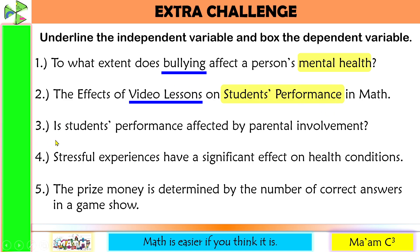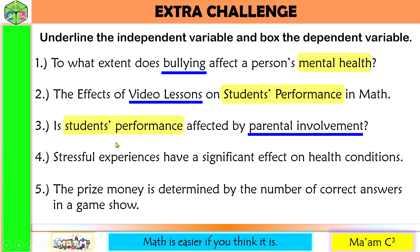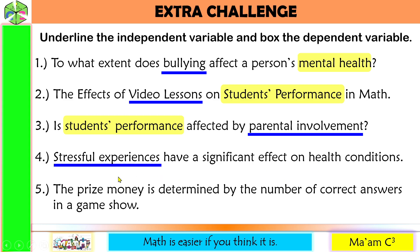Number three: is student's performance affected by parental involvement? The independent variable is parental involvement — depending on the parental involvement, you can analyze the student's performance, which is the dependent variable. Number four: stressful experiences have a significant effect on health conditions. The independent variable is stressful experiences, and that has an effect on health conditions, which is the dependent variable.